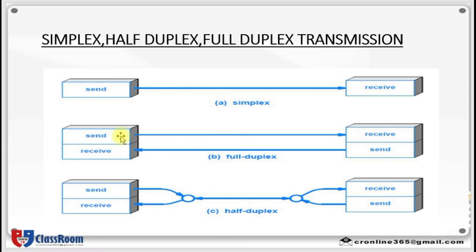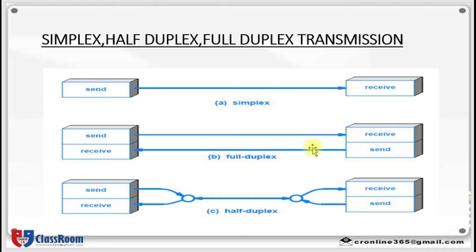In full duplex, the sender sends data and the receiver accepts data. At the same time, at the receiver end there is one more sender. That sender sends data, and at the sender end there is a receiver that accepts data. So if data can go both ways at the same time, it is known as full duplex. It requires two wires for data transmission.